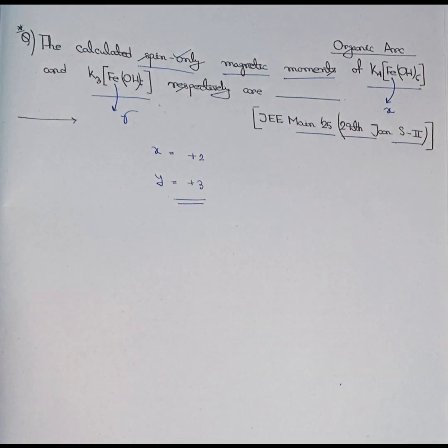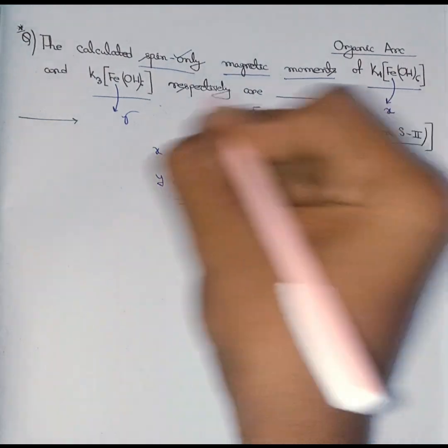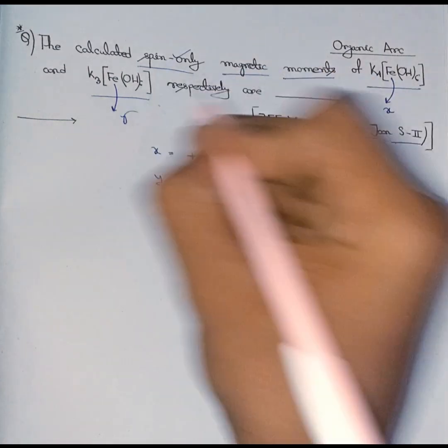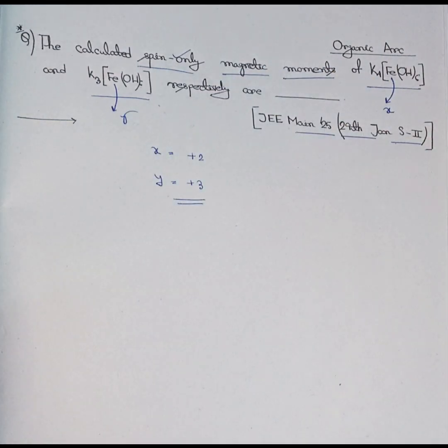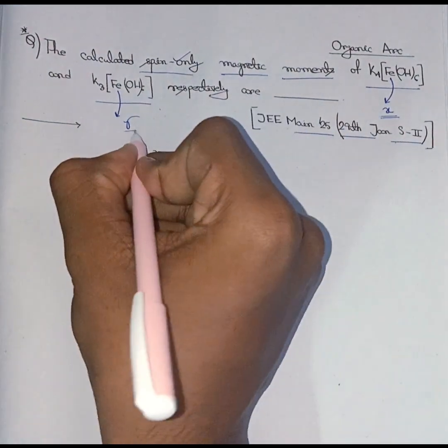In this question, we have to calculate the spin-only magnetic moment of these two complex compounds respectively. And before calculating the spin-only magnetic moment, we have to calculate the valency of the central atom for both of these complex compounds. And here I have taken the valency of Fe here as x and here as y.